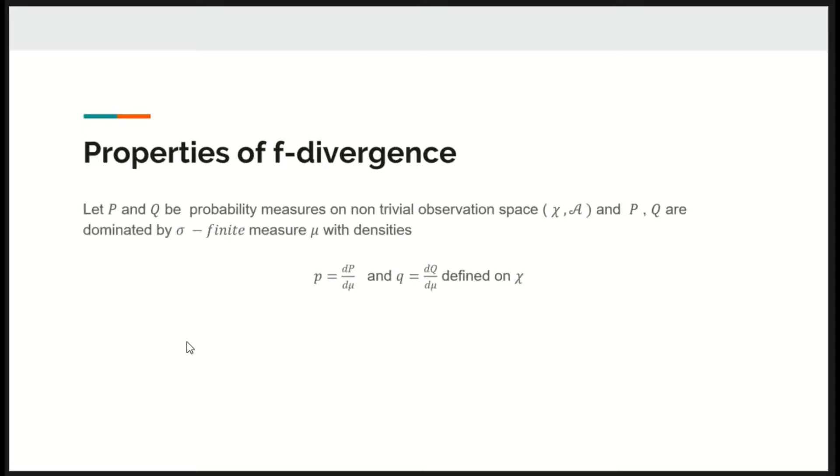Let us look at some properties of F-divergence. Let P and Q be probability measures on non-trivial observation space, non-trivial in the sense that A minus chi is not equal to empty set. P and Q are dominated by sigma finite measure mu with densities P equals dP by dmu and Q equals dQ by dmu.